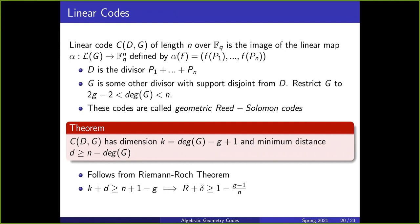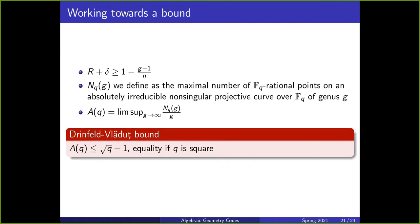The first theorem is that the dimension of these codes is the degree of G minus the genus of the curve plus 1, and the minimum distance d is greater than or equal to n minus the degree of G. This follows from the Riemann-Roch theorem. Adding dimension and minimum distance gives k plus d is greater than or equal to n + 1 minus g. Dividing by n, the rate r plus the relative minimum distance delta is greater than or equal to 1 minus (g−1)/n. To get an asymptotically good family of codes, we need curves with as many rational points as we want.